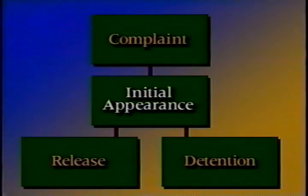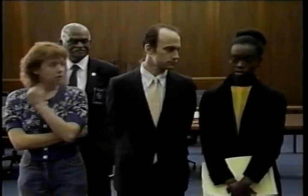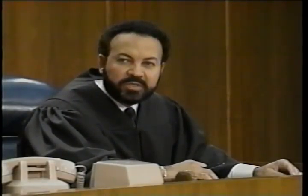Once the defendant has spoken with an attorney, the next step is the initial appearance before the magistrate judge. In the hypothetical case, the court convenes. Counsel identify themselves: Assistant United States Attorney Rhonda Johnson for the United States, and Jack Lee on behalf of Ms. Smith. The magistrate judge asks Angela Smith to state her name for the record, and the deputy clerk administers the oath.